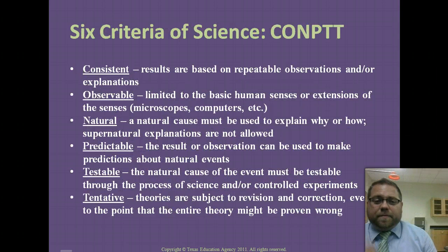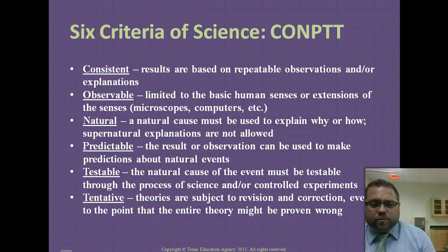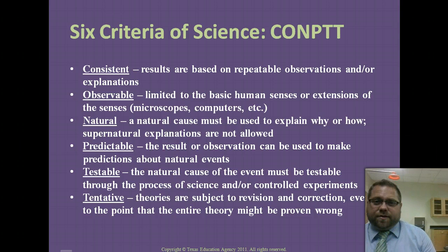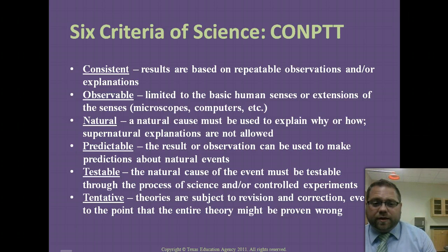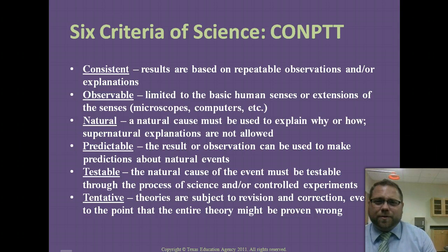The criteria of science: it needs to be consistent, observable, natural, predictable, testable, and tentative. There are six criteria you should know. You can use the acronym CONPTT to help remember them.